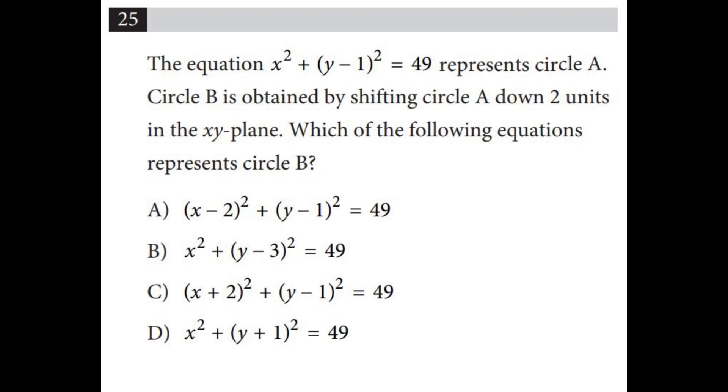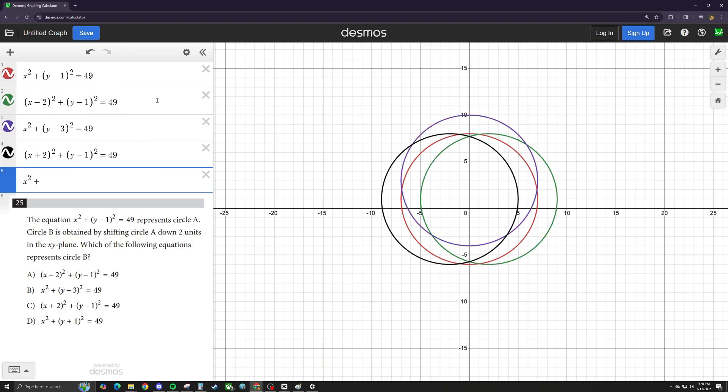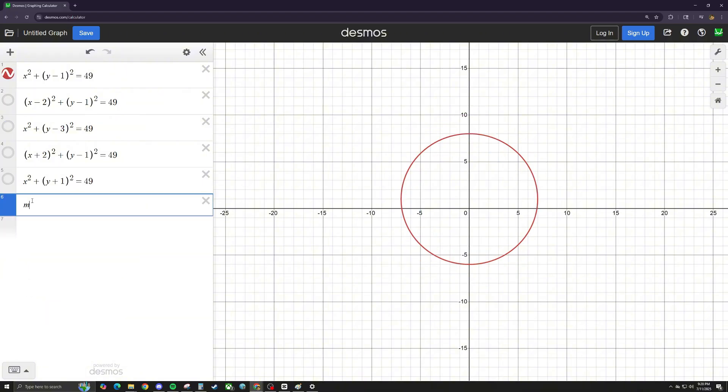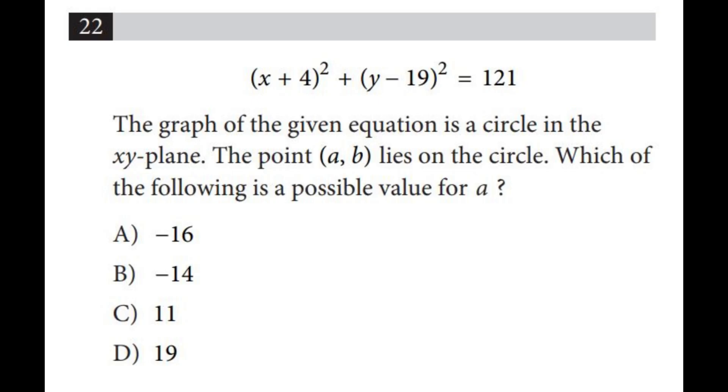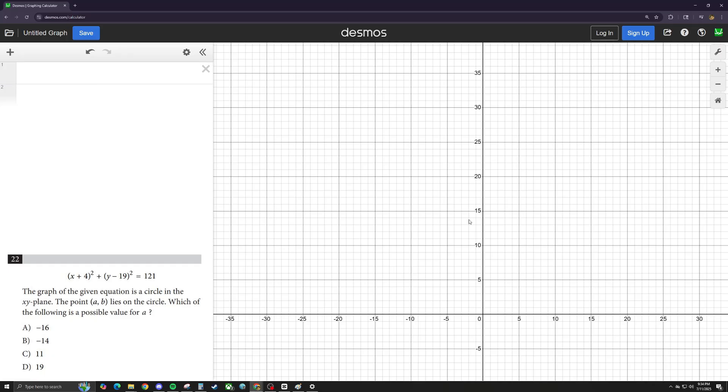Desmos also lets you graph circles. So for a question like this, if you don't remember the equation for a circle, you can just brute force it and put every single answer choice A, B, C, and D and see which one is shifted down by two points. Additionally, you can get some nice information from Desmos. Like the center of the circle is the midpoint of two opposite points. You can literally just type in midpoint and enter those two coordinates and that will show up for you right there in Desmos. For a question like this, instead of having to remember the equation for a circle and reasoning which one of these answer choices will lie on that circle, you can literally just drag your mouse over the entire thing and see every single point, including the point that matches one of the answer choices.